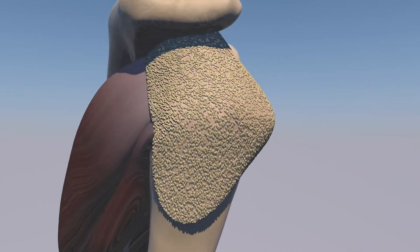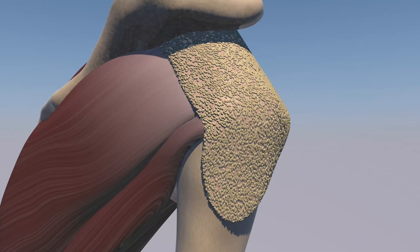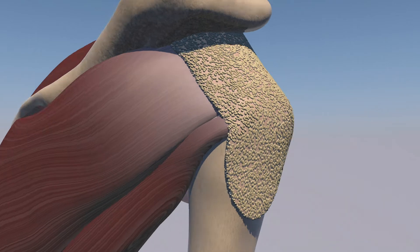Here's essentially a normal subdeltoid bursa with peribursal fat around it. You can see how thin it is and it just kind of laces over the rotator cuff musculature and the proximal humerus.